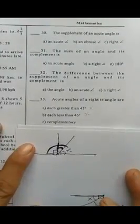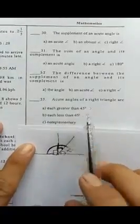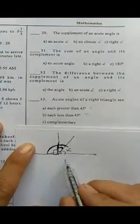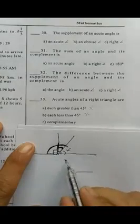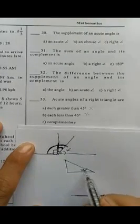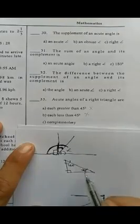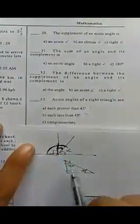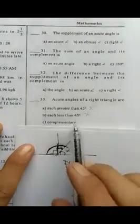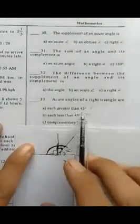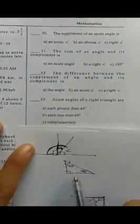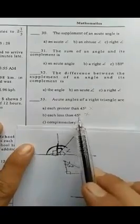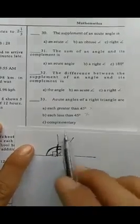The statement that the acute angles of a right triangle are each greater than 45 is wrong, because right triangles can have angles like 30 and 60. So it can be less than 45 — not all acute angles of a right triangle are each greater than 45.